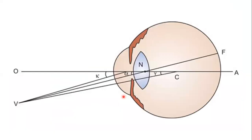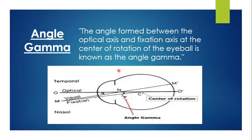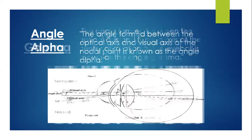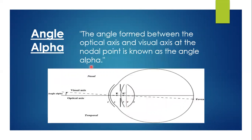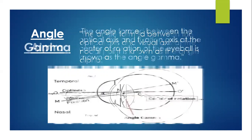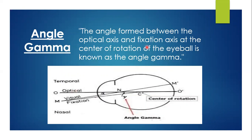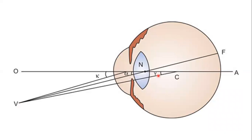Over here you can see: this is the optical axis and real axis — that is angle Alpha. This is the optical axis and fixation axis — that is angle Gamma over here. And over here it is angle Alpha.